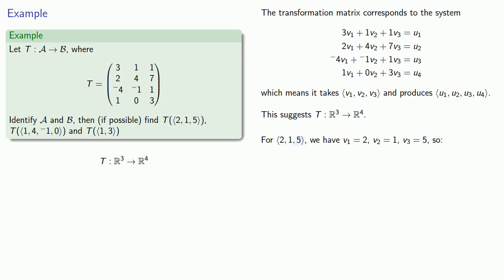We can substitute these into our formula for u1 and find that 12 is the first component of our vector. Likewise, we can substitute these values for v1, v2, and v3 into our second formula to find the second component of our vector is 43. Substituting (2,1,5) into our equation for u3 tells us that u3 is equal to negative 4. And finally, u4 is equal to 17.